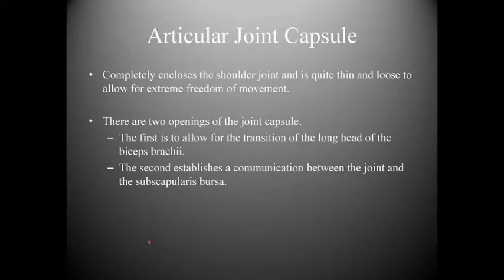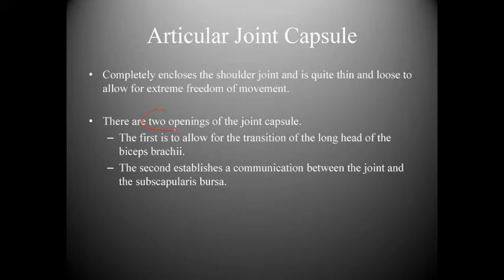The articular joint capsule completely encloses the shoulder joint. It is thin and loose to allow for extreme freedom of movement. There are two openings: one to allow passage of the long head of the biceps brachii, and another to establish communication between the joint and the subscapularis bursa, indicating this is not a fully closed capsule.